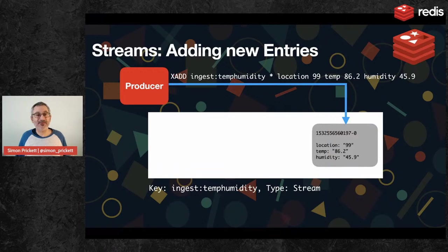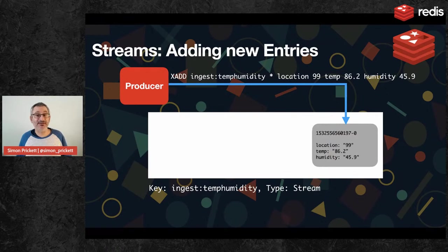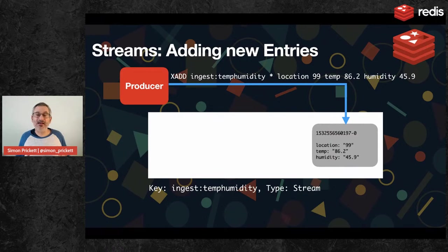How do we add stuff to a stream? There's one command to add things to a stream — it's called XADD. All the streams commands begin with X and we'll come to that later. We're going to do XADD, say add it to a stream called 'ingest:temp_humidity'. We then say asterisk, which tells Redis to use its default ID scheme — we default to timestamps. Then we provide a series of name-value pairs: location 99, temp 86.2, humidity 45.9. As with many Redis data structures, there's no explicit create step required. If you XADD something to a stream that doesn't exist, it just creates a stream at that key name and puts the first thing in.